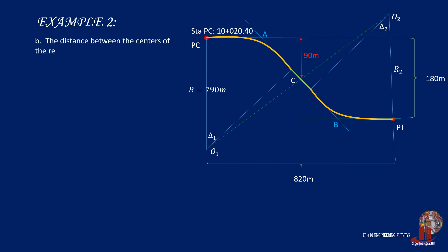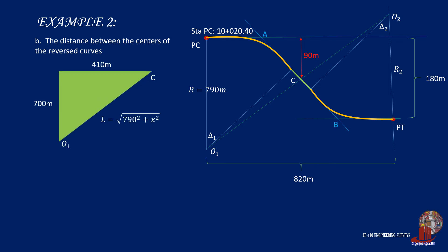The distance between the centers of the reverse curves is twice the length L. Plugging in computed values, the distance O1O2 equals 2 times root(790² plus 184.39²), which simplifies to 1622.47 meters.